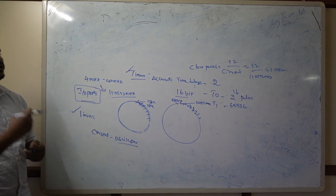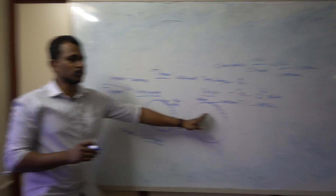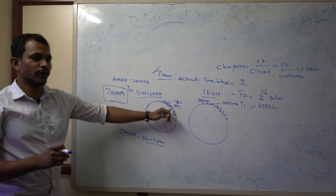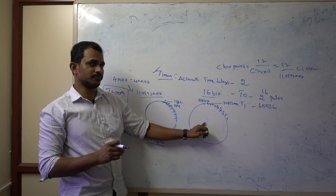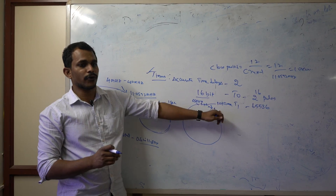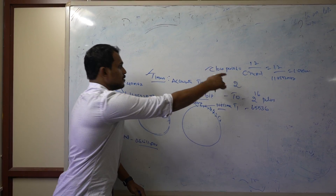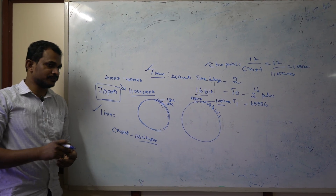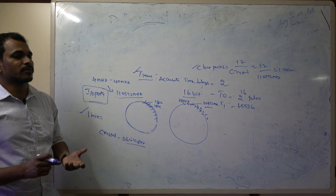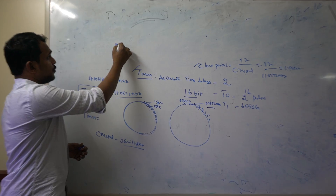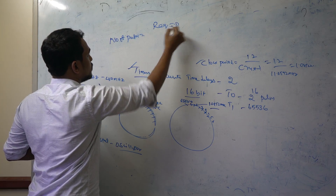By counting these pulses, your microcontroller generates the required time delay. Just like a normal watch generates time by counting seconds, here we generate time delay by counting pulses, where each pulse is 1.0852 microseconds. Based on your delay requirement, you need to determine how many pulses to count. The formula is: number of pulses = required time delay divided by constant time delay (1.0852 µs per pulse).